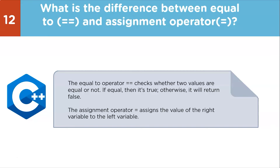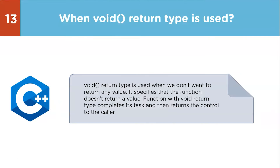The thirteenth question: when is void return type used? Void return type is used when we don't want to return any value — it specifies that the function doesn't return a value. A function with void return type completes its task and then returns control to the caller.